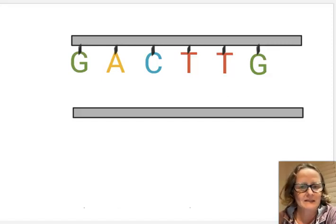There are four bases and they're color-coded. If we're going to work out what's on the other strand, remember DNA is a double helix. There are two strands of DNA that are complementary to each other that match up.